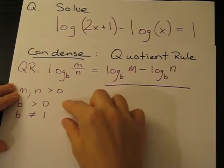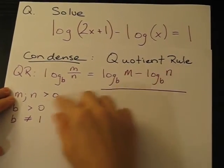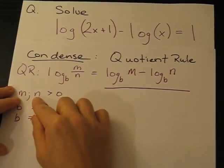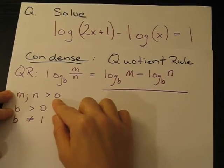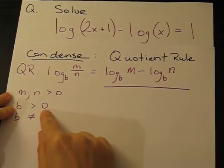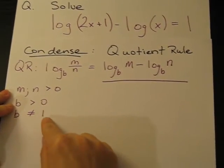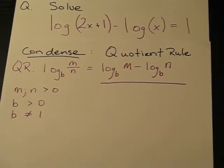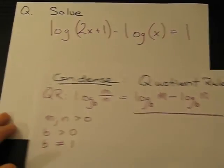The restrictions regarding this rule, the quotient rule, are that m and n must be positive, b must also be positive, and b cannot equal 1. So using those rules, we'll go ahead and solve this.